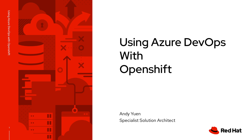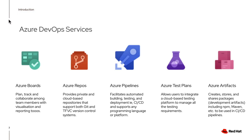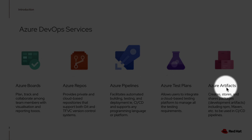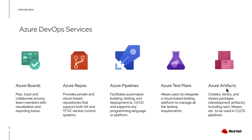Before I begin, a few words on what Azure DevOps and OpenShift are. Azure DevOps consists of a number of cloud-based services. These services allow development and operations to work together throughout the development lifecycle, increasing the speed and quality of software deployment.